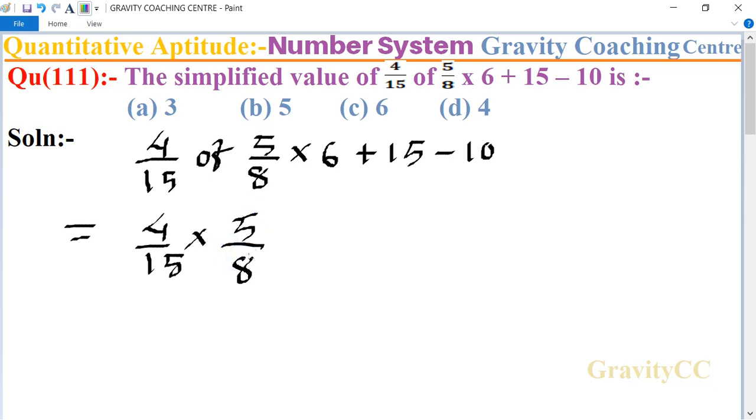5/8 × 6 + 15 - 10. So 5 × 3 is 15, and 4 and 8,